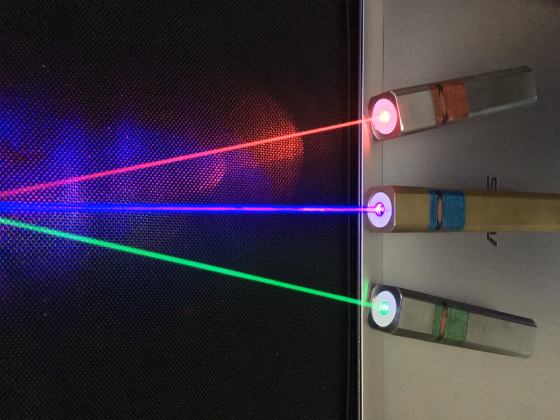A high-powered green laser pointer bought over the Internet was reported in 2010 to have caused a decrease of visual acuity from 6/6 to 6/12. After two months acuity recovered to 6/6, but some retinal damage remained.